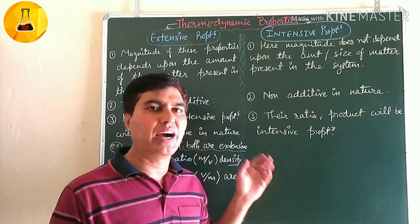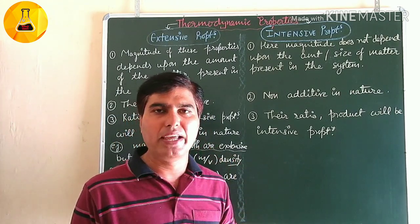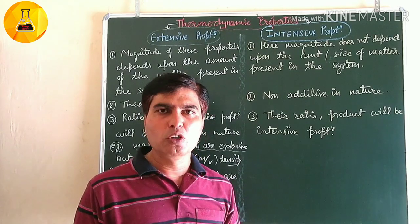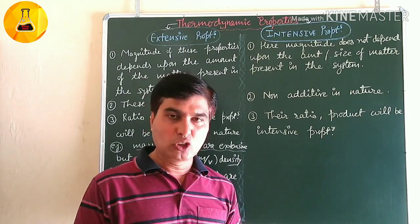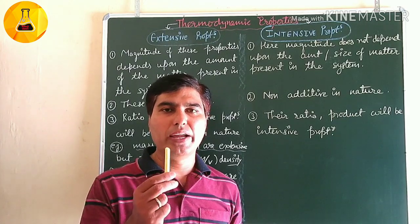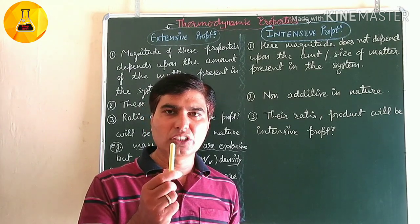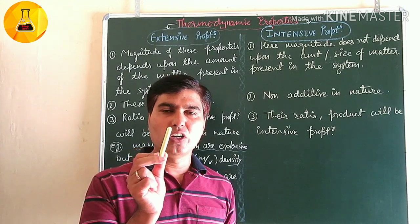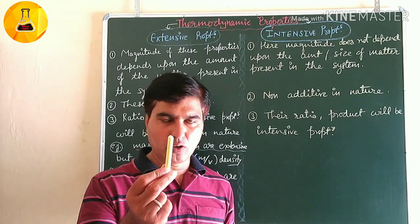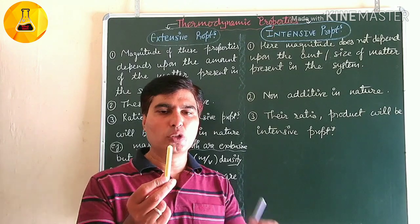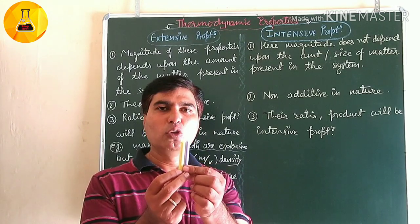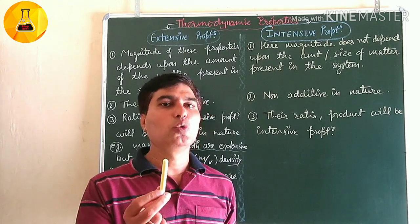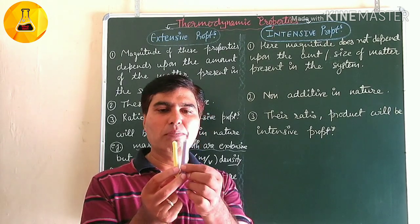Here we have two examples: mass and volume. Mass is for solid and volume is for gas and liquid. So you can see I have a chalk here. The chalk's property we will measure is mass. Think that this chalk is 10 grams. Now in the first experiment I check the single chalk — 10 grams. In the second experiment, I take another chalk and check the mass of both.